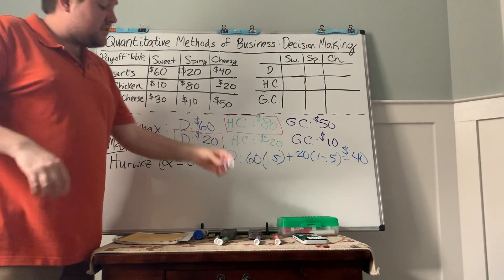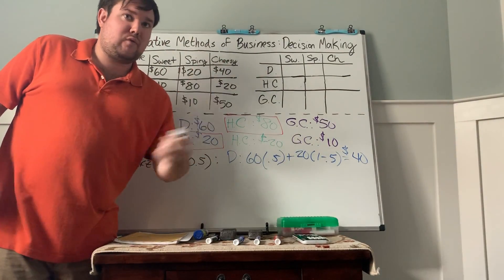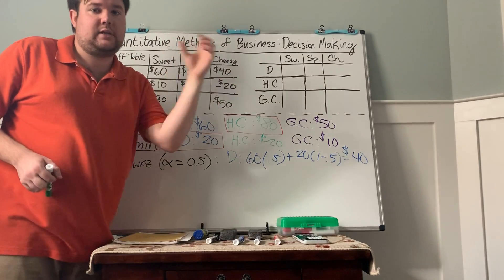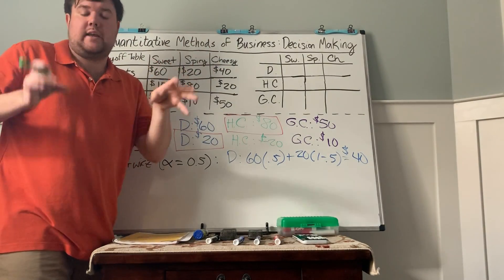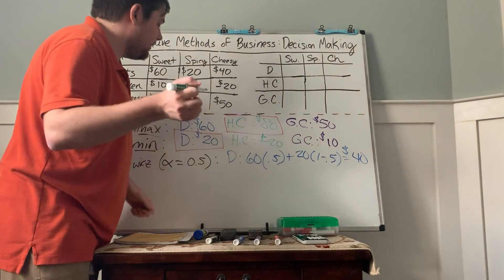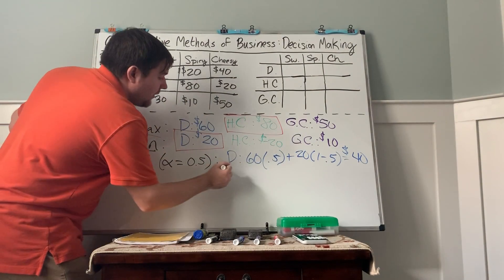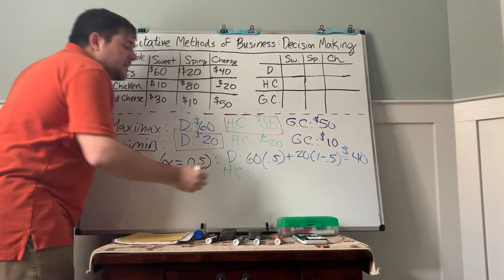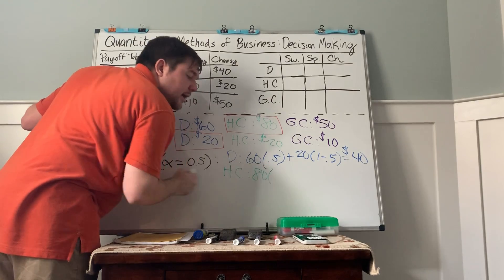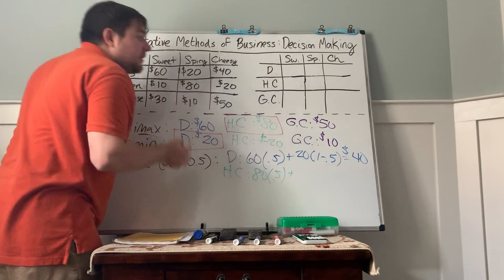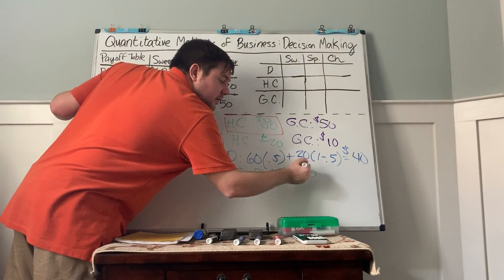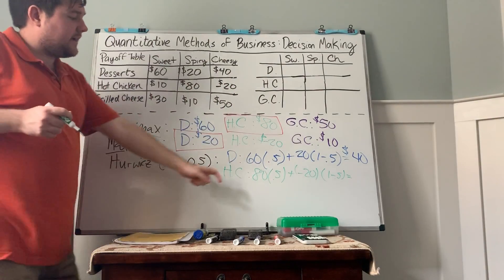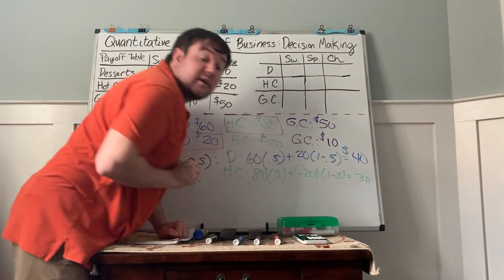In this case, we're going to have 30 plus 10, that's going to be $40,000. This is not saying that we are going to make $40,000 with this venture. It is just a way of incorporating both the best case and worst case scenarios. Now we do the same thing with hot chicken. We take the best case scenario, times our alpha, and we take the worst case scenario, the negative 20, and we take it times 1 minus alpha. And so in this case, 40 minus 10, it's going to give us $30,000.